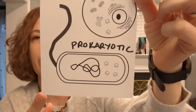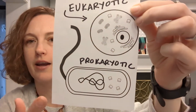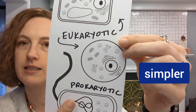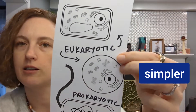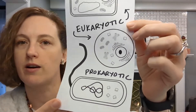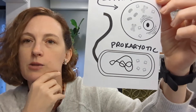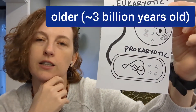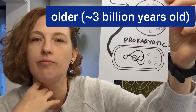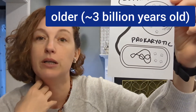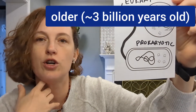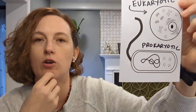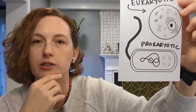When we look at the prokaryotic cell compared to the eukaryotic, the prokaryotic cell is much simpler — you only see a couple of things inside of it, whereas there are a lot more things inside the eukaryotic cell. This is because prokaryotic cells evolved much earlier than eukaryotic cells, about 3 billion years ago, and it took almost 2 billion more years before eukaryotic cells evolved, which came around a billion years ago.